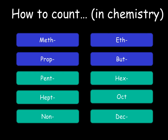It is very important to be able to count in chemistry. For your GCSE you need to be able to use the first four: meth meaning one carbon, eth for two carbons, prop for three and but for four. We've also got pent, hex, hept, oct, non and dec just for reference points, representing five, six, seven, eight, nine and ten carbons.